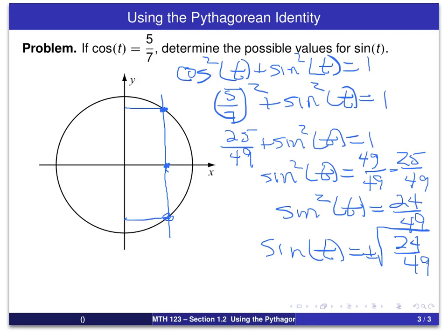Now, one last step we take most often is, if we use properties of square roots, we can see that the square root of 49 is 7. So, our final answer we will usually write as, sine of t will be plus or minus the square root of 24 over 7.